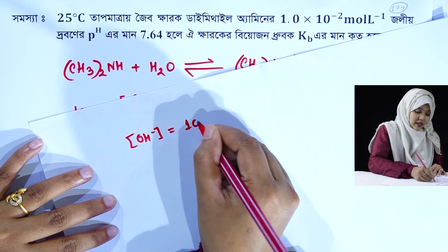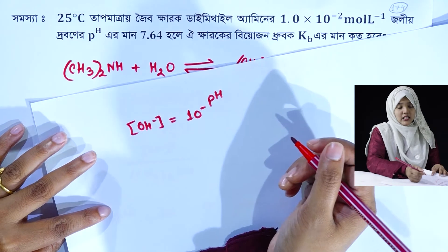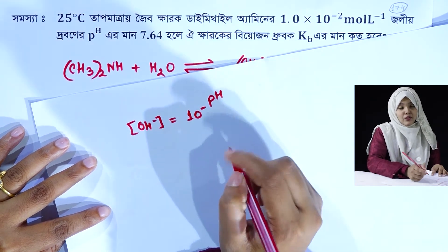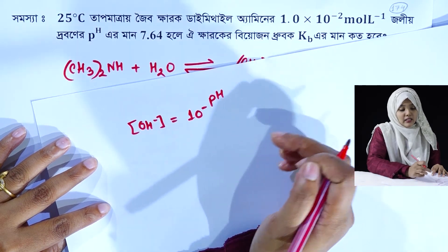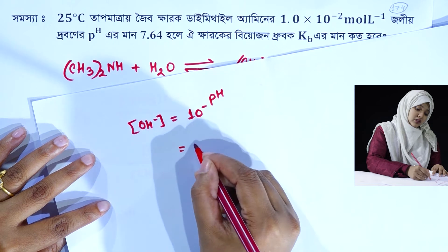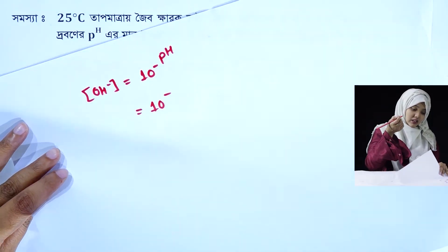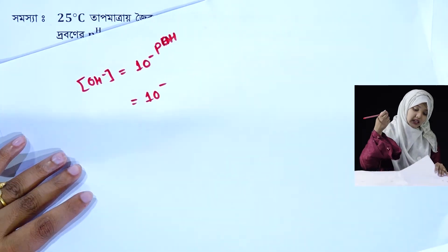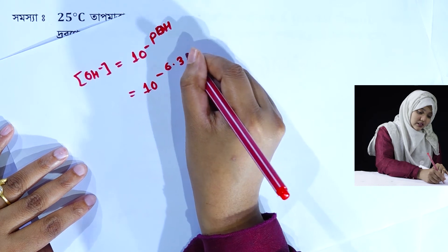10 to the power minus pH. By the way, we are talking about anti-log of pH — anti-log means 10 to the power. So minus anti-log means 10 to the power minus pH. We are looking at the solution — 10 to the power minus pH means the hydroxyl ion concentration. pH means 10 to the power minus 6.36.